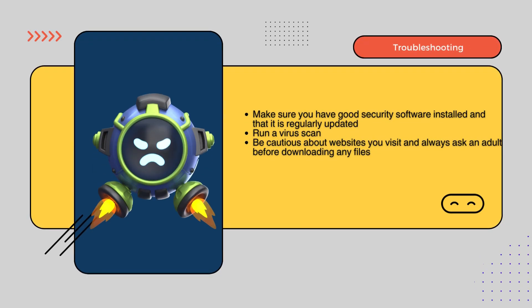This is a tough one. Your computer might have a virus or malware. Don't panic, we can handle this. First, make sure you have good security software installed and update it regularly. That's like giving your computer a protective shield. Next, run a full virus scan to locate and remove any threats. Going forward, be cautious about websites you visit and files you download to prevent future infections. Always ask an adult first.